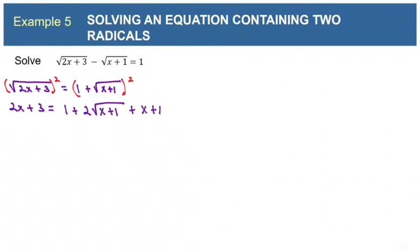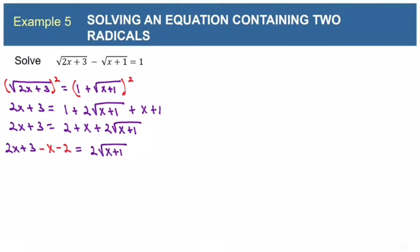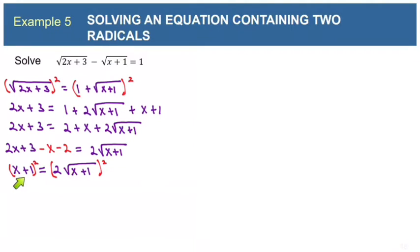Now we want to isolate this remaining radical. Combine like terms on the right side, then move both other terms to the left side by subtracting them from both sides — they show up negative on the left. Combining terms: 2x minus 1x is x, and 3 minus 2 is 1, leaving 2 times the square root of x plus 1 isolated. Since this is a product, we can square both sides without needing FOIL on the right. We do need to FOIL the left side because it's a sum: first times first is x squared, outer and inner together make 2x, and last times last is 1.